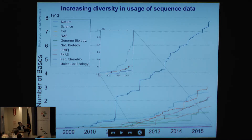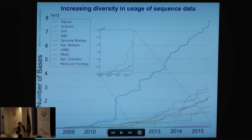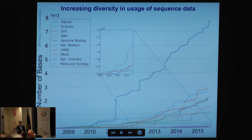One way of looking at that is to examine papers people are publishing in relation to sequencing and what subject those papers are in. This picture shows the number of bases associated with publications in different journals — the different lines are different journals. Nature has traditionally dominated genomics, with the largest associated data. But what's really interesting is seeing journals such as Nature Chemical Biology and Molecular Ecology — sequencing technology and ideas are diffusing into these journals.